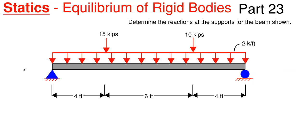A pin will have two reactions — one in the x and one in the y direction for a 2D system. So we can have a reaction here and let's call this point A. We can have a horizontal reaction, which is A sub x, and we will have a vertical reaction, A sub y.